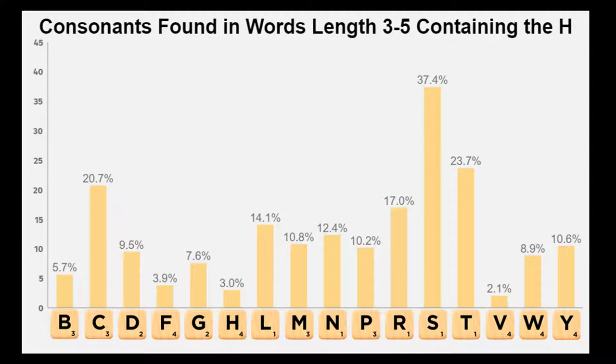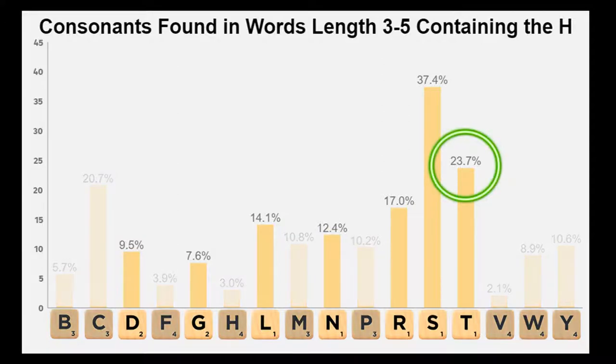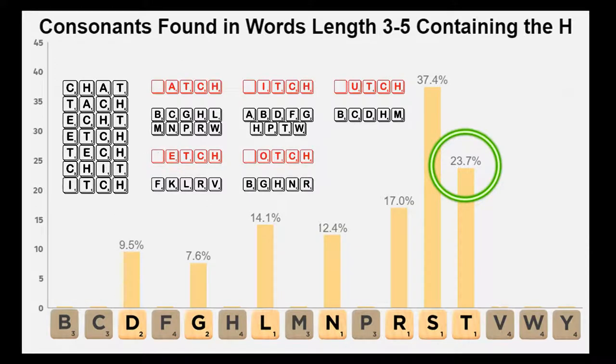Among the other low-point tiles, the T enjoys by far the best chemistry with the H in shorter words, with all of the other tiles in that group suffering much steeper declines from bingo length words. In fact, the T even works harmoniously with the CH combo, forming a plethora of high-scoring shorter words.